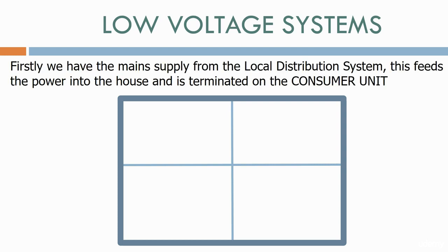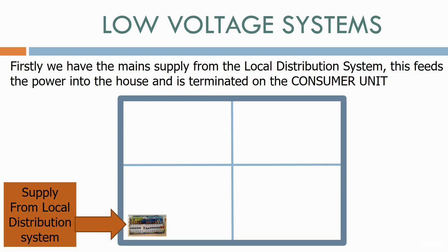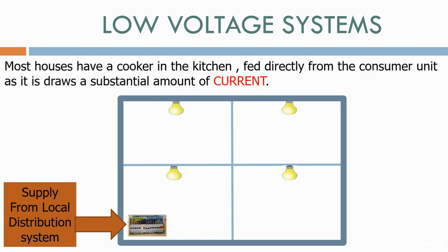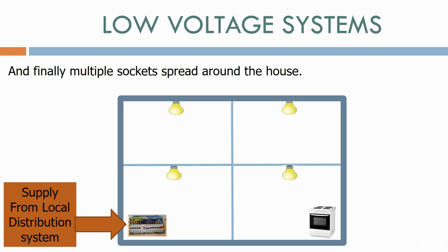Firstly, we have the main supply from the local distribution system. This feeds the power into the house and is terminated on the consumer unit. We then have lighting loads in each room of the house. Most houses have a cooker in the kitchen, fed directly from the consumer unit as it draws a substantial amount of current, and finally multiple sockets spread around the house.